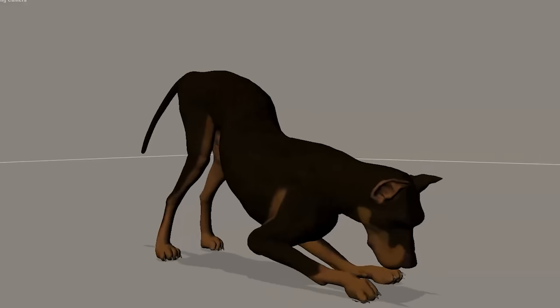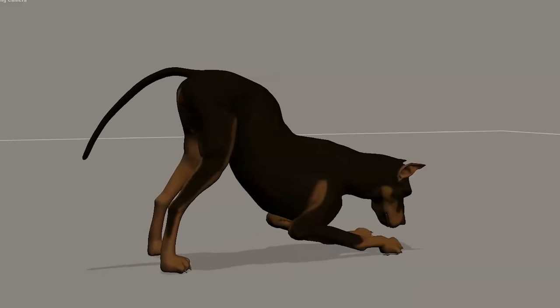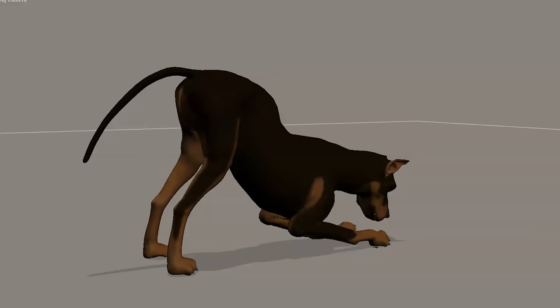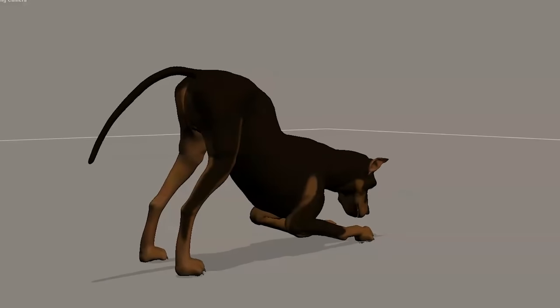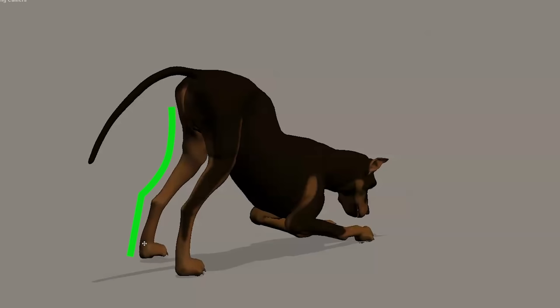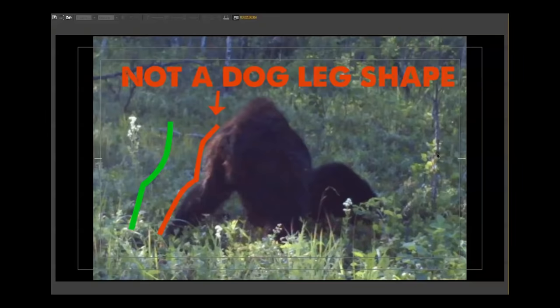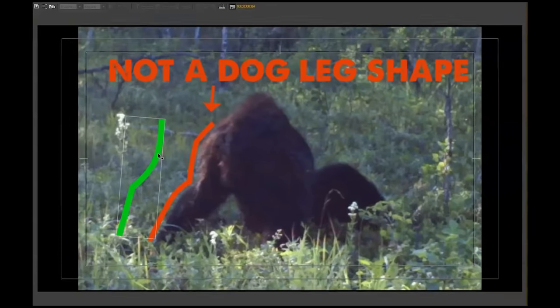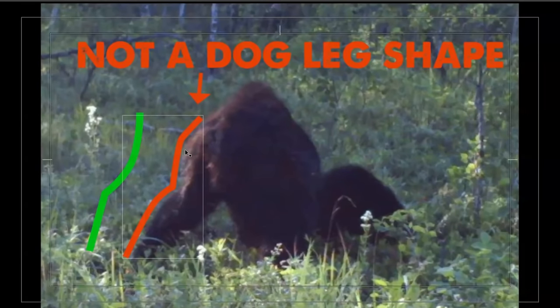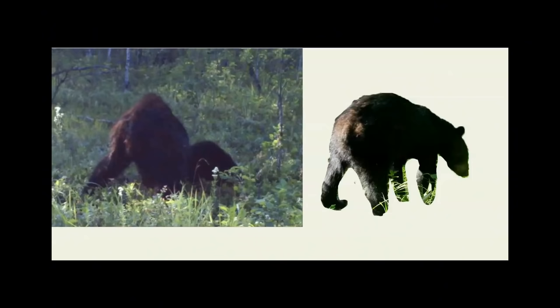It's obviously not a dog because dogs have that classic hind leg shape — that bent dog shape. Now look at the dog leg compared to the red line. Not similar at all. It is not a dog leg shape.